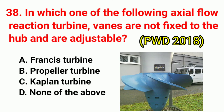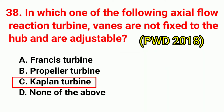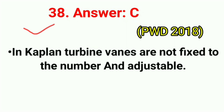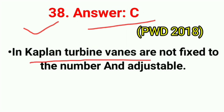Question No. 37/38. In which one of the following axial flow reaction turbines are vanes not fixed to the hub and are adjustable? Correct answer is option C: Kaplan turbine. In a Kaplan turbine, vanes are not fixed to the hub and are adjustable.